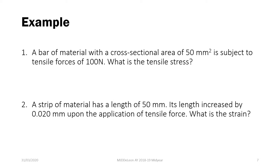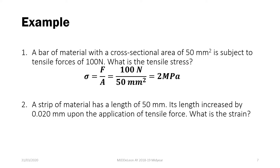First: a bar of material with a cross-sectional area of 50 mm² is subject to tensile forces of 100 N. What is the tensile stress? Recall that tensile stress equals force over area. So we compute 100 N over 50 mm², and we get 2 MPa, or 2,000,000 Pa.